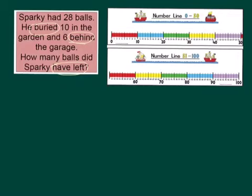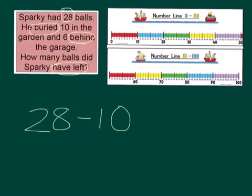So let's think about the number sentences we're going to have to write to figure this out. So first of all, he started with 28 balls. Okay, so 28. And he buried 10. So take away 10. That's our first step to solving this problem.